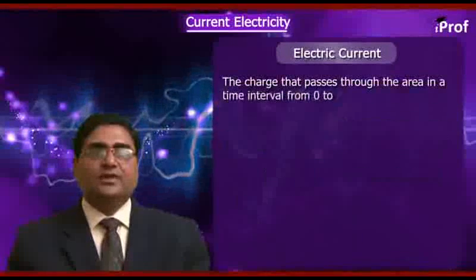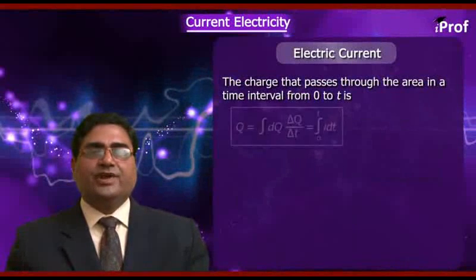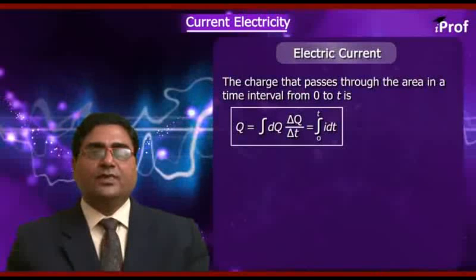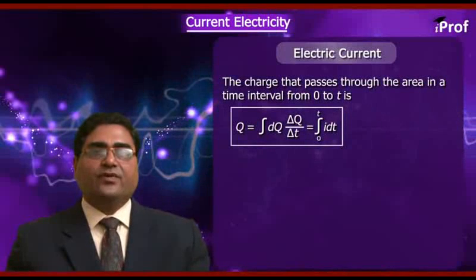The charge that passes through the area in a time interval from 0 to T is Q equal to integration of DQ, equal to integration of I DT from 0 to T.